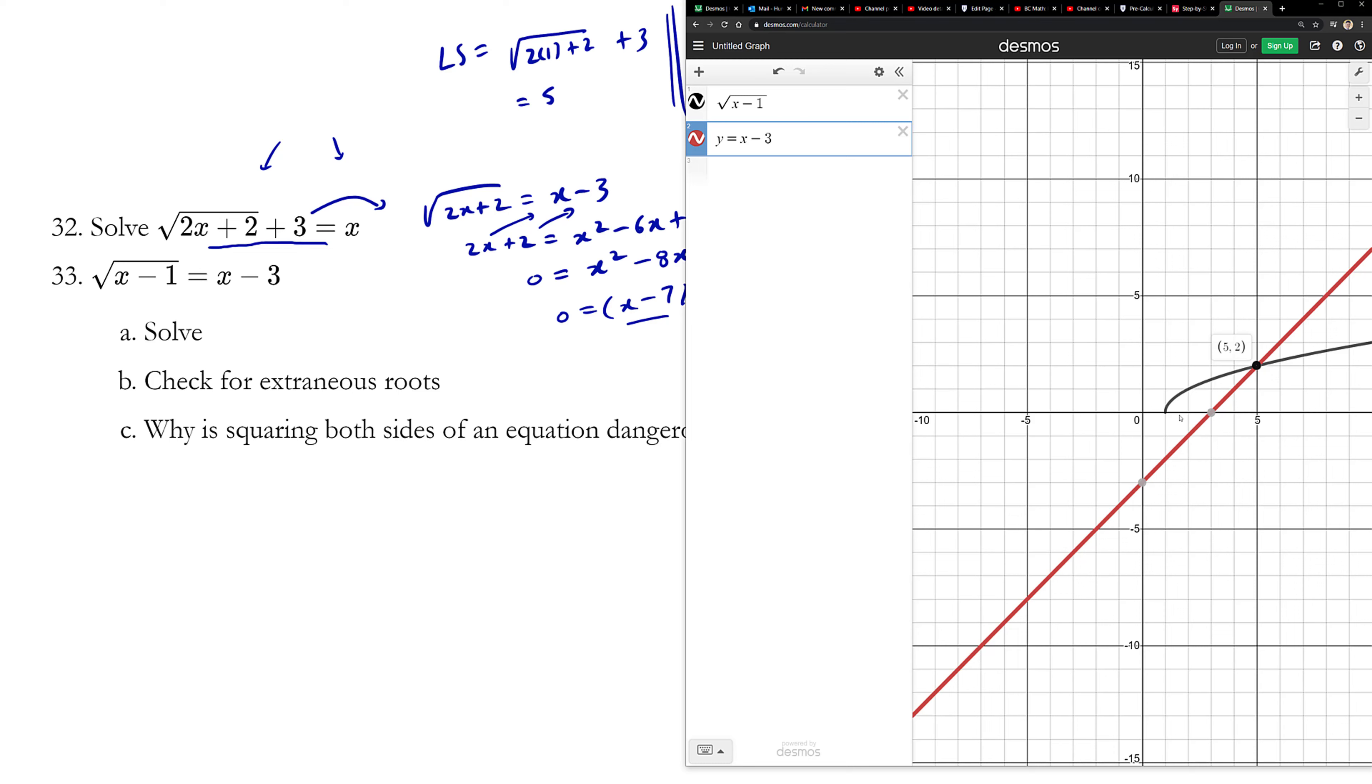If the square root graph flipped over, if you punched in y equals negative √(x - 1), and there's, in a different dimension, there would be another answer of 2. But we need to reject that as extraneous.